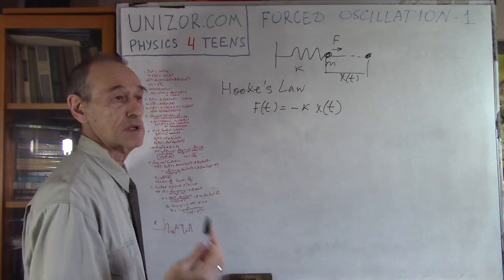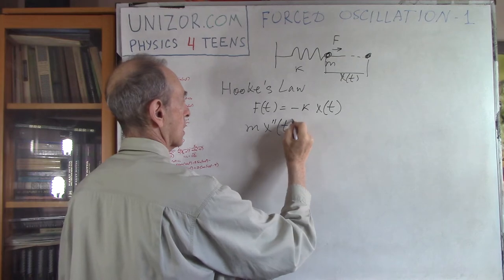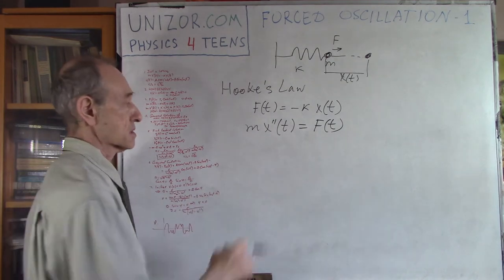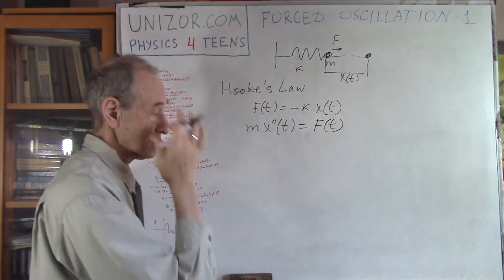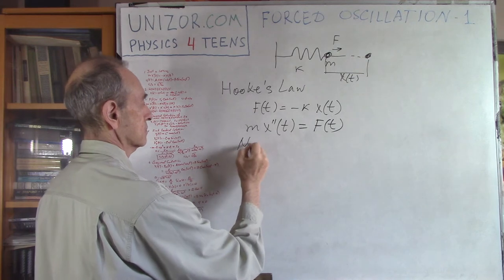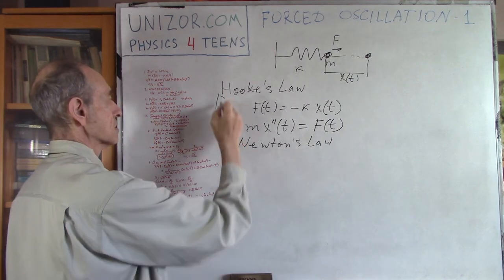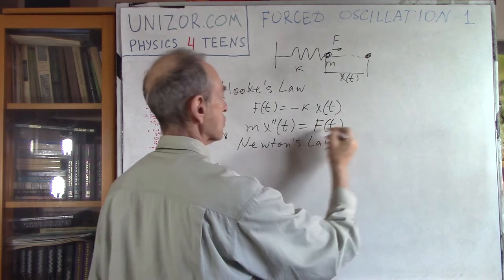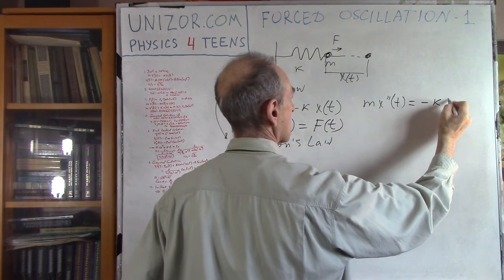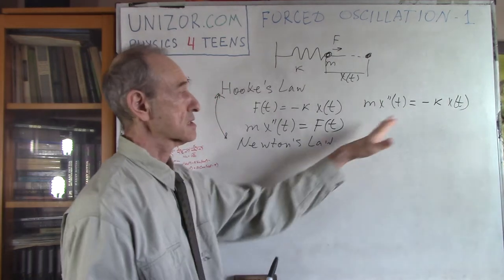We also have Newton's law: all forces equal mass times acceleration. Acceleration is the second derivative of distance — the first derivative is speed, the second is acceleration. These two laws give us a differential equation: M·X'' = -K·X. That's what we considered in a previous lecture — this is free oscillation.